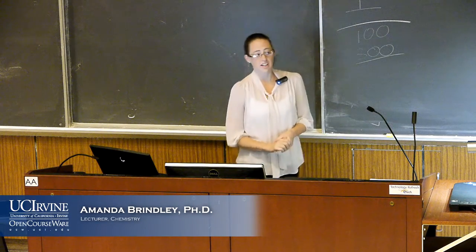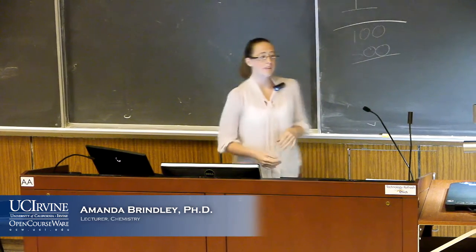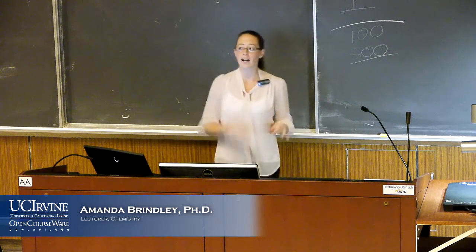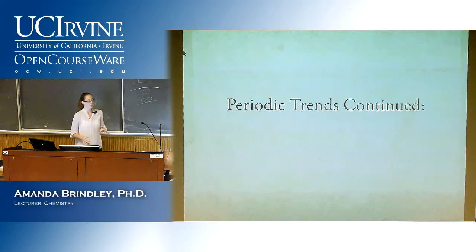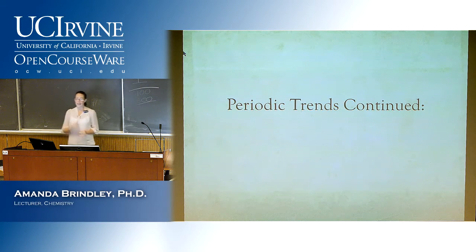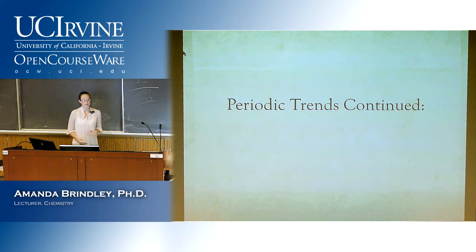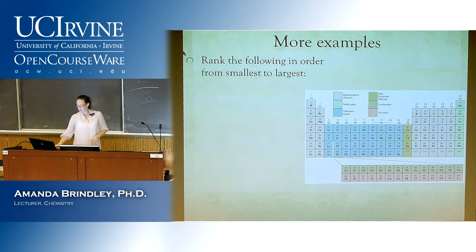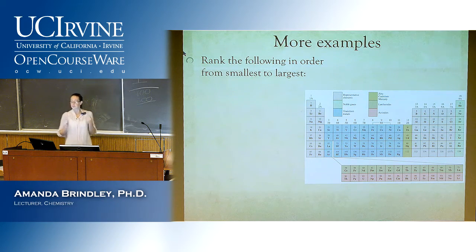Last time we had started talking about our different periodic trends, beginning with effective nuclear charge because that's one of the main reasons behind all of our other trends. Today we're going to continue with that and start where we left off, doing examples of ionic ones. Here's a little periodic table to use as we go through — as always, you should have the periodic table in front of you so you can follow along.